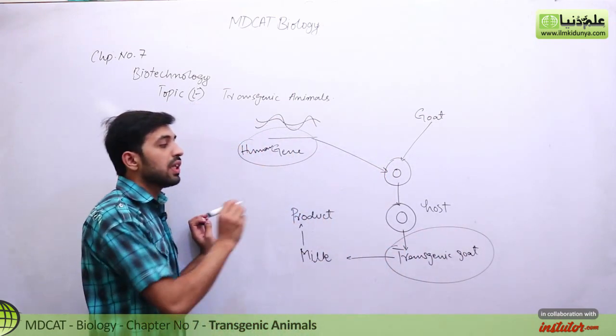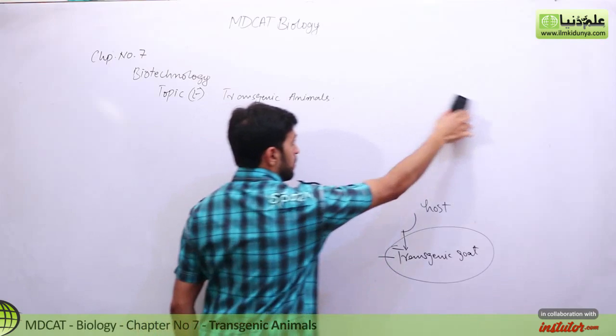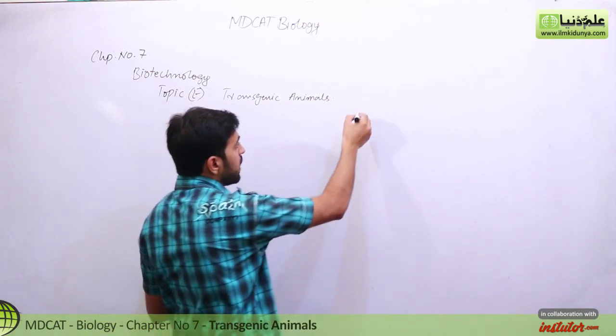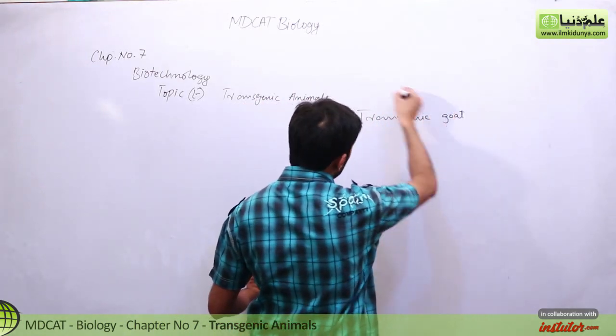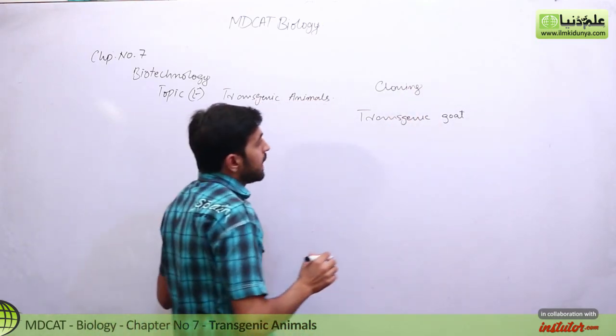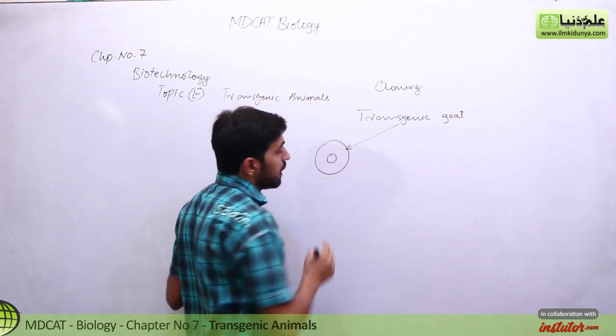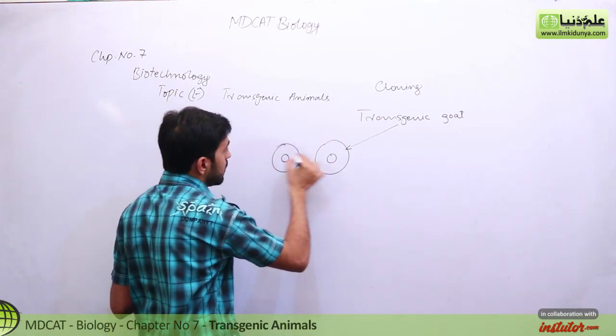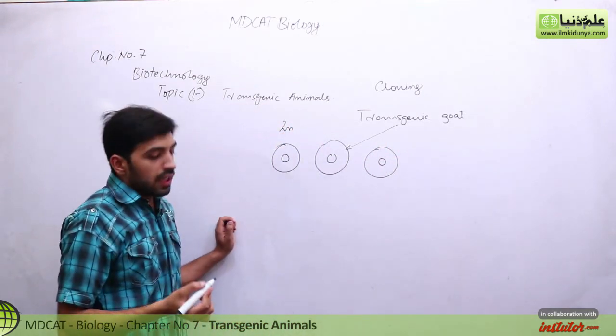Now we have cloning. So what is the method that we use? Like for example, we have transgenic goat produced. We talk about cloning, this is an asexual mode of reproduction. Now what do we do? We take an egg, and this will be 2N structure because it is diploid.